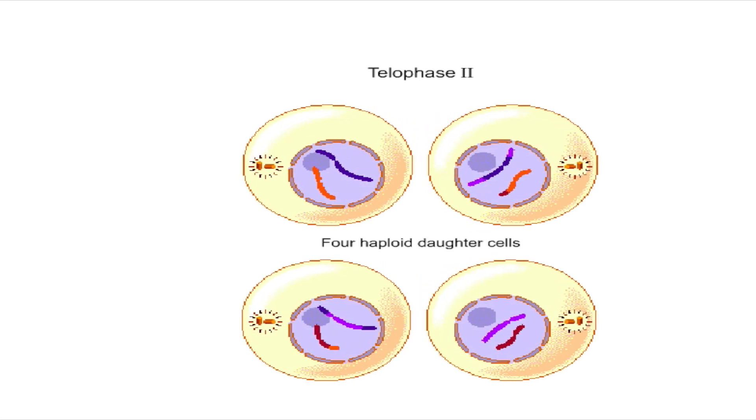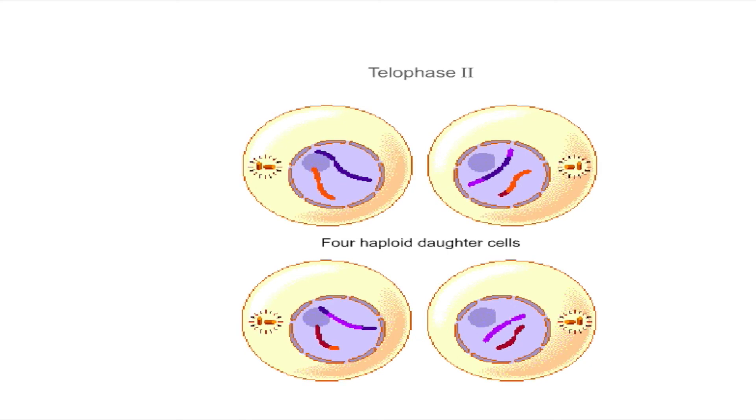Cytokinesis then occurs, producing four daughter cells (gametes in animals), each with a haploid set of chromosomes. Because of crossing over, some chromosomes are seen to have recombined segments of the original parental chromosomes. The end products of meiosis are four haploid cells. Every cell has one copy of each chromosome set, but these copies are not identical to the original parental chromosome due to crossing over in prophase one.